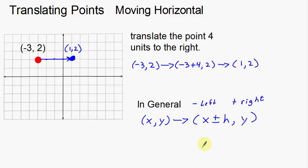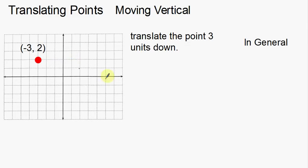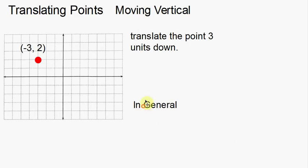So that is translating points horizontally. What about translating points moving vertically? This is very similar but just a little bit different. We have the same point here, and we want to translate the point three units down. We're going to translate this point three units down and see how the coordinates are going to change.